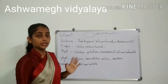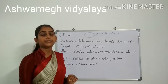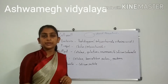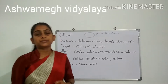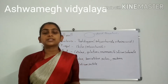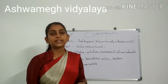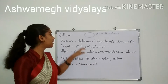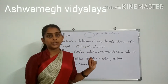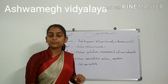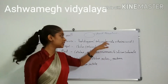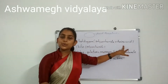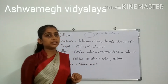Now we will discuss cell wall in detail. We will discuss both eukaryotic and some prokaryotic cell walls. Prokaryotic cell wall is made up of peptidoglycan. This peptidoglycan chain is made up of polysaccharide plus amino acid. Remember this one.